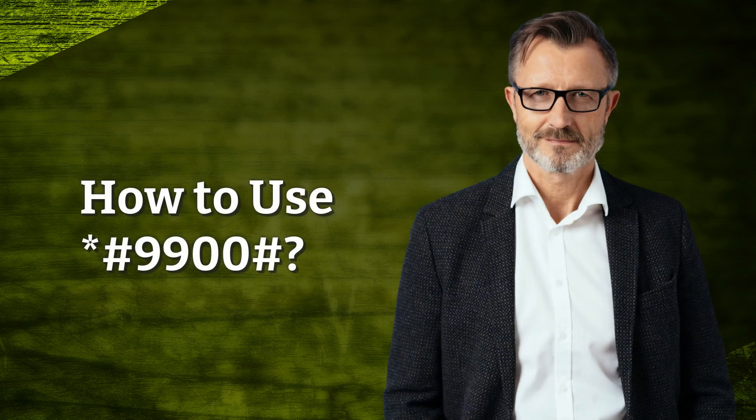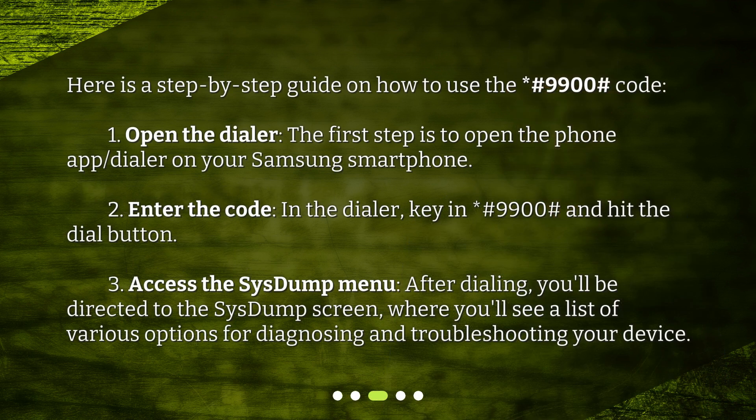How to use *#9900#? Here is a step-by-step guide. Step 1: Open the dialer — the first step is to open the phone app dialer on your Samsung smartphone. Step 2: Enter the code — in the dialer, key in *#9900# and hit the dial button.